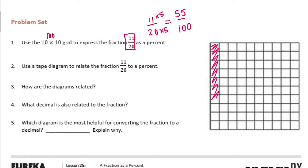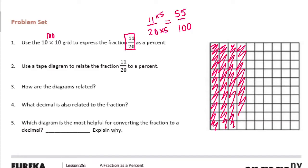So there's 10, 20, 30, 40, 50, and then 1, 2, 3, 4, 5 — 55. So that would be equal to 55%.